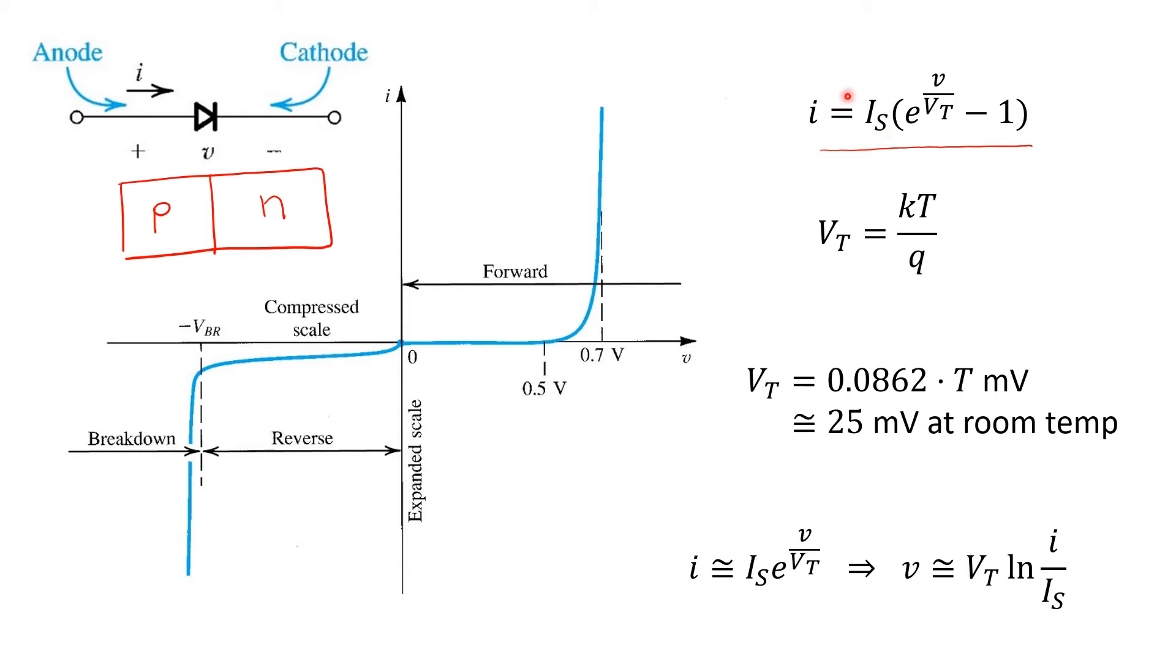I-S, in absolute terms, is a very small value. So this is shown here in a compressed scale. In reality, this part of the plot would be very, very close to 0, but slightly below it. Finally, it's important to keep in mind that this exponential voltage-current relationship does not apply in the reverse breakdown region.